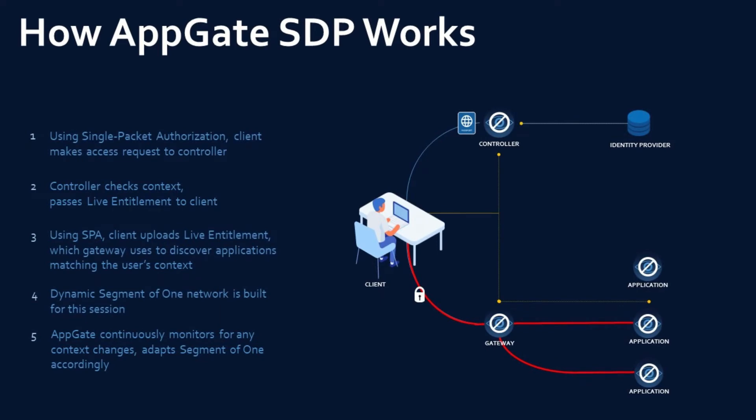SDP works using the concept of Single Packet Authorization, or SPA. A client makes access requests to a controller. The controller checks the context and then assigns a live entitlement to the client using SPA. The client uploads this entitlement to the gateway, which is used to discover applications matching that user's context. In the flow, the client talks to the controller, which talks to the identity provider, which assigns the entitlement — then that's pushed to the gateway, which decides what that user with that device, in that context combining user and device component risk, gets access to based on need-to-know and labeling.